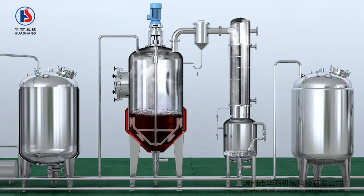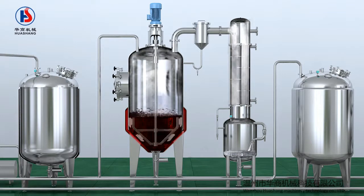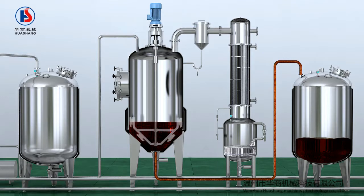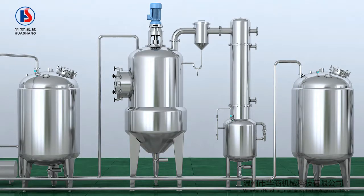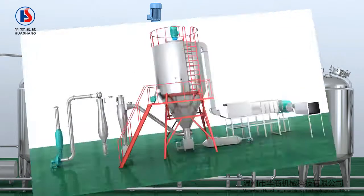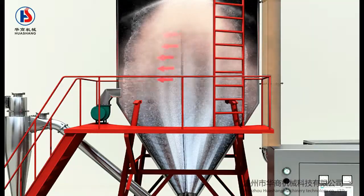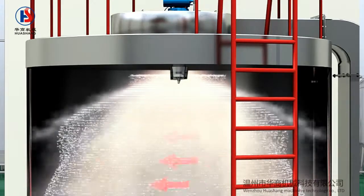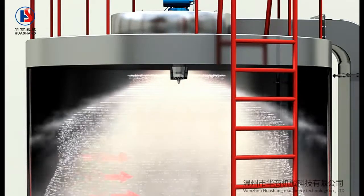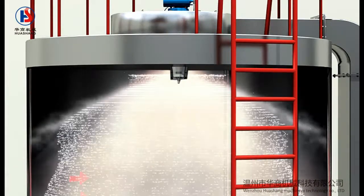The concentration can be accurately measured through the automatic concentration meter. If the concentration reaches the preset value, the system will stop heating automatically. Break the vacuum and open the bottom valve, and the liquid will then be transferred to the concentrated liquid storage tank. Clients can choose different drying modes according to their own needs. If the material in powder form is needed, transport the material into a spray dryer. Vacuum drying or belt drying can be carried out as well.